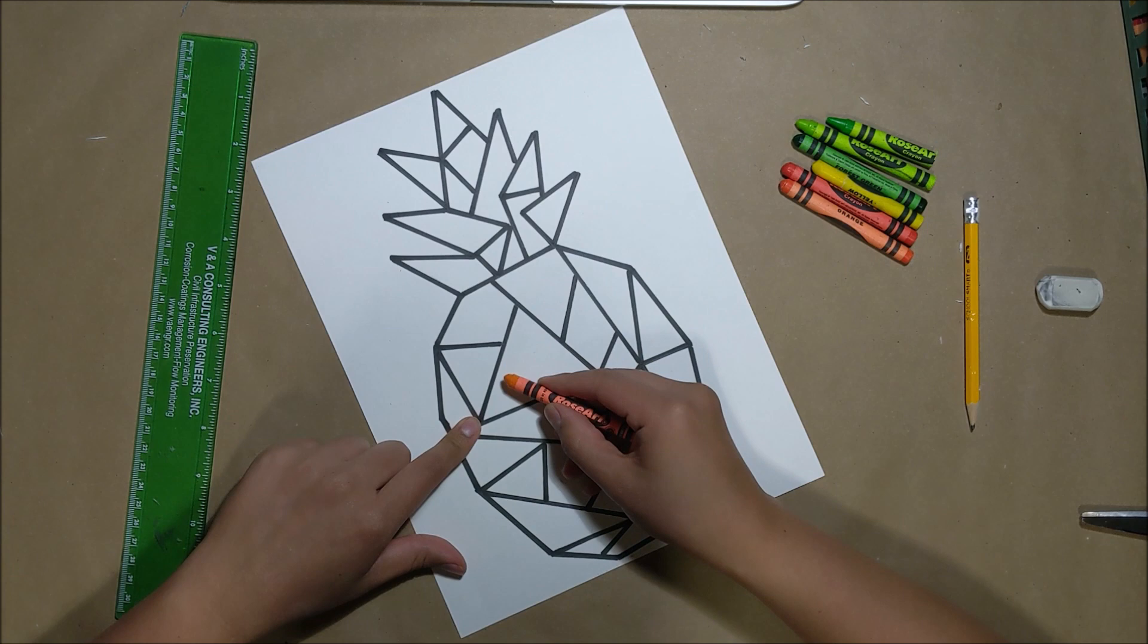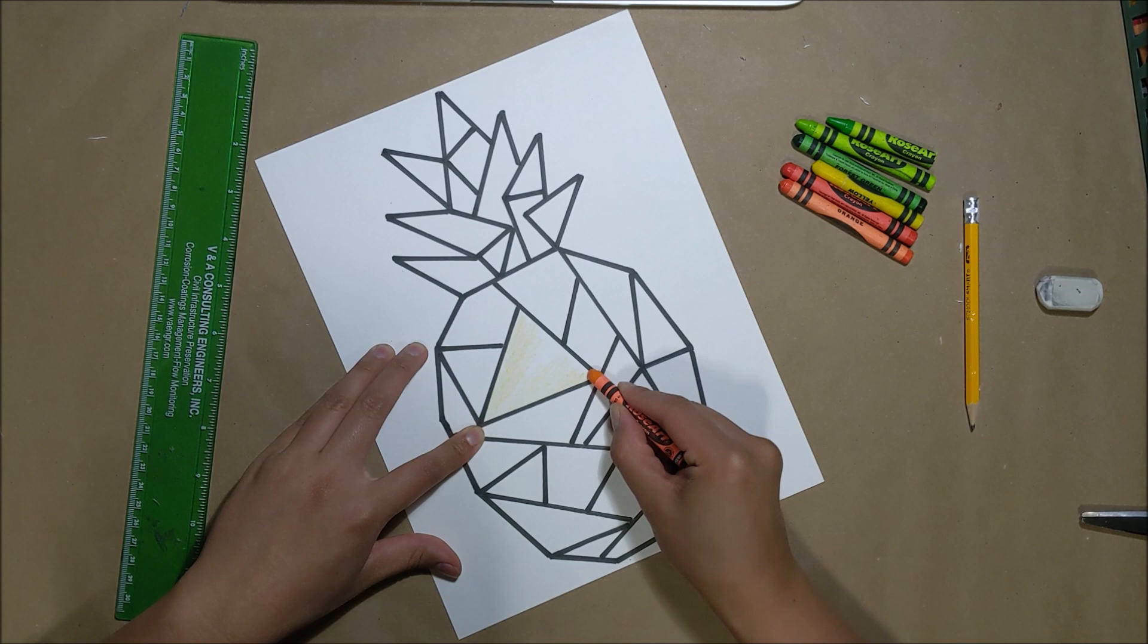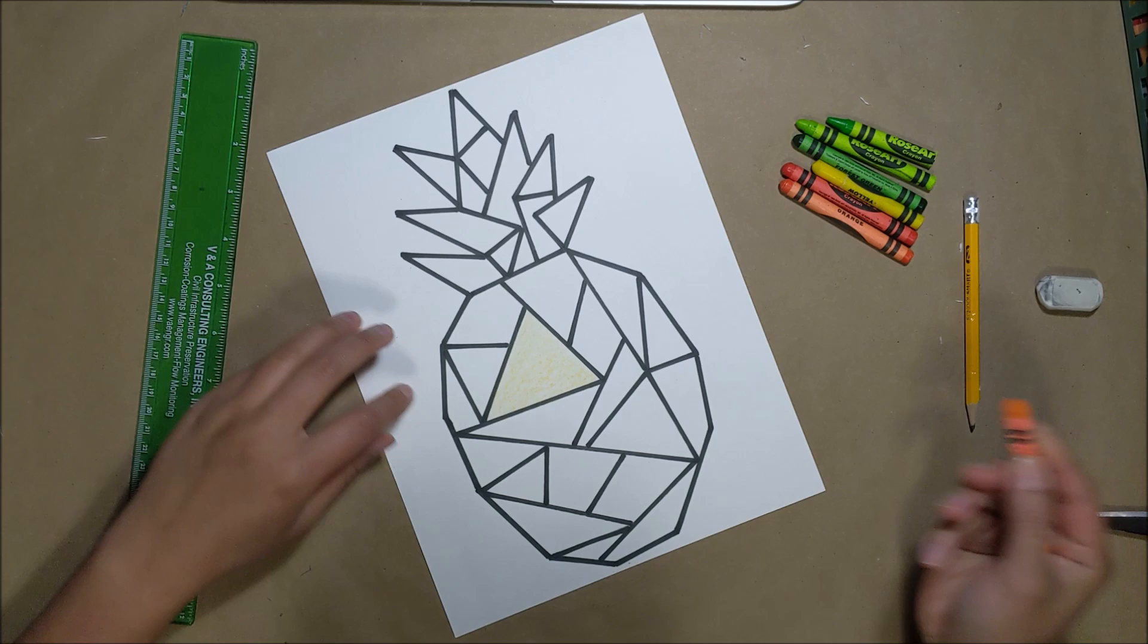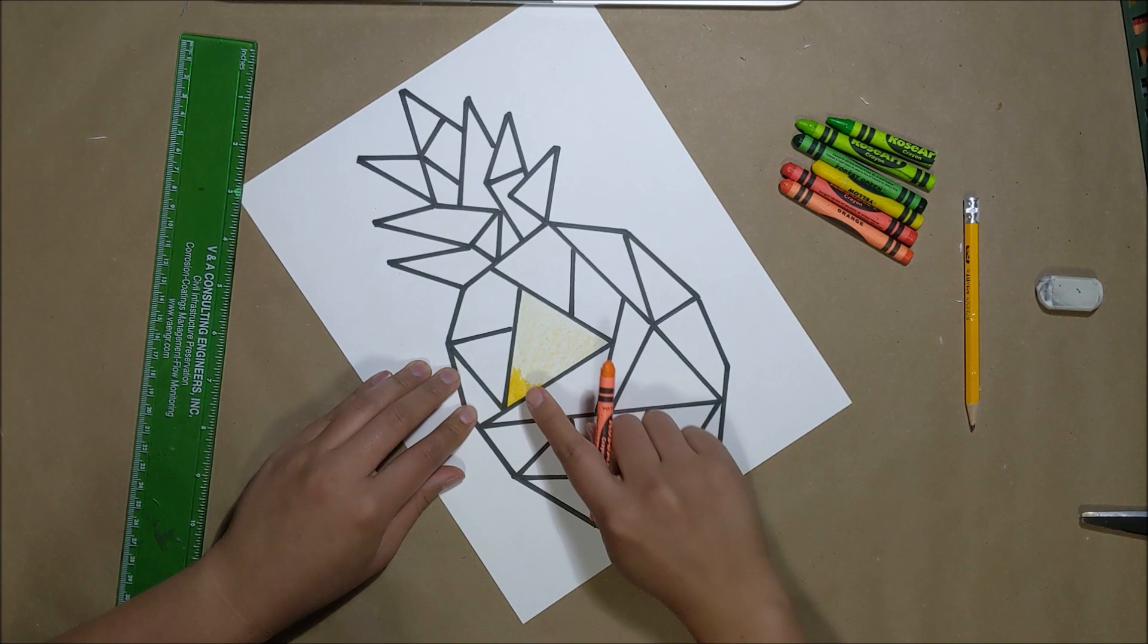When we color, we're going to start with the lightest shade of our color. Then, choosing one of the corners, you're going to create high-pressure coloring, making sure that it has the darkest layer of coloring.